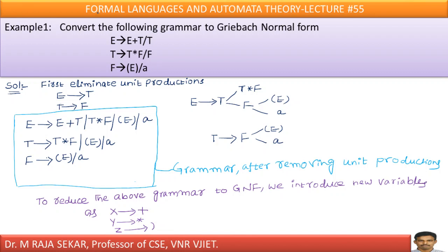My dear friends, welcome to Rajashekar classes on formal languages and automata theory. This is lecture number 55. This is a given grammar that must be converted into Greibach Normal Form.